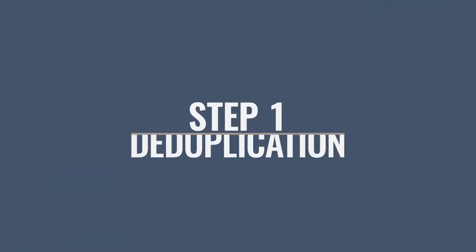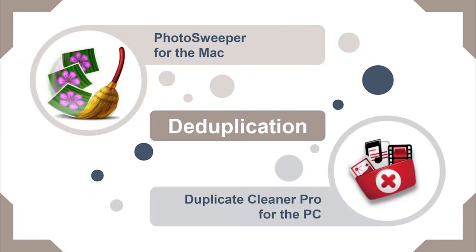Step one: de-duplication. Before we get into the world of de-duping, let's talk a bit of lingo. De-duping simply means finding the duplicate photos, or dupes, and deleting them. There are some great apps out there that will help identify them for you. For the Mac we have Photo Sweeper, and for the PC we have Duplicate Cleaner Pro.